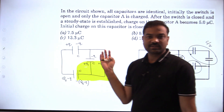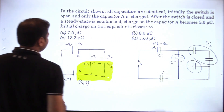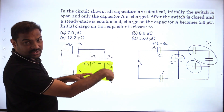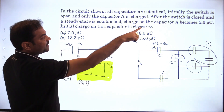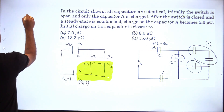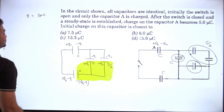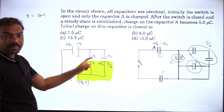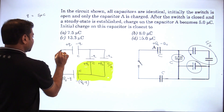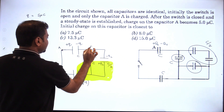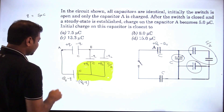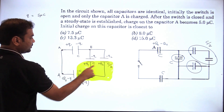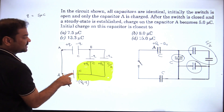Now we can find the charge values. The q value has been given: after closing the switch, the final charge on this capacitor is 5 microcoulombs, so q = 5 μC. If we know this charge, we can find the charge on the remaining capacitors. We can find the potential difference — let this be point A and point B, and find V_A minus V_B. These two capacitors are in parallel, then series.